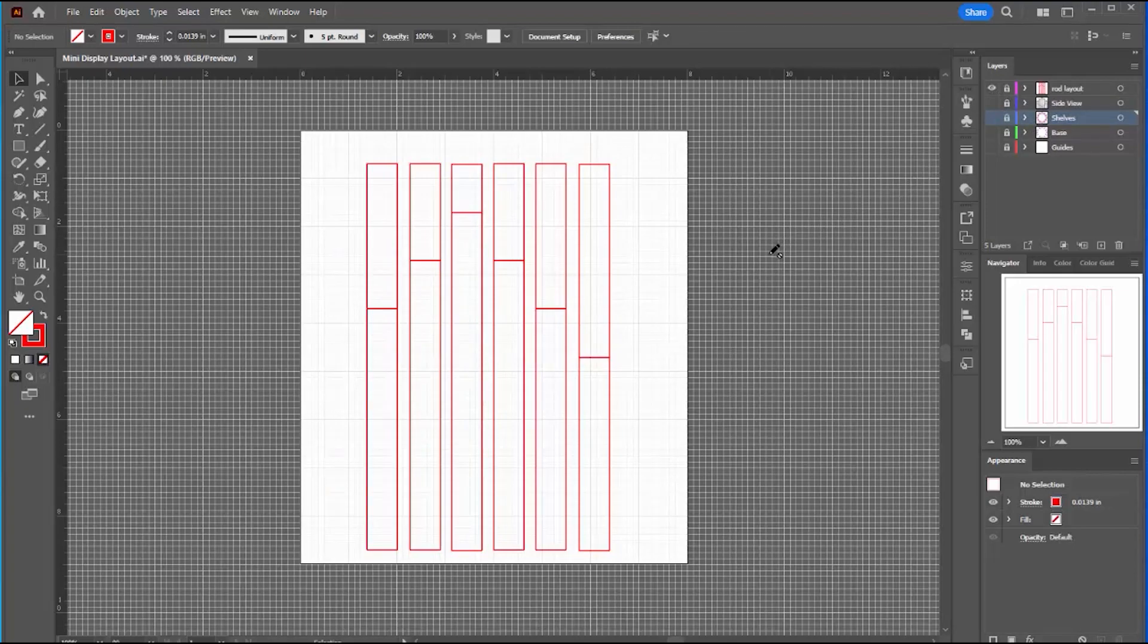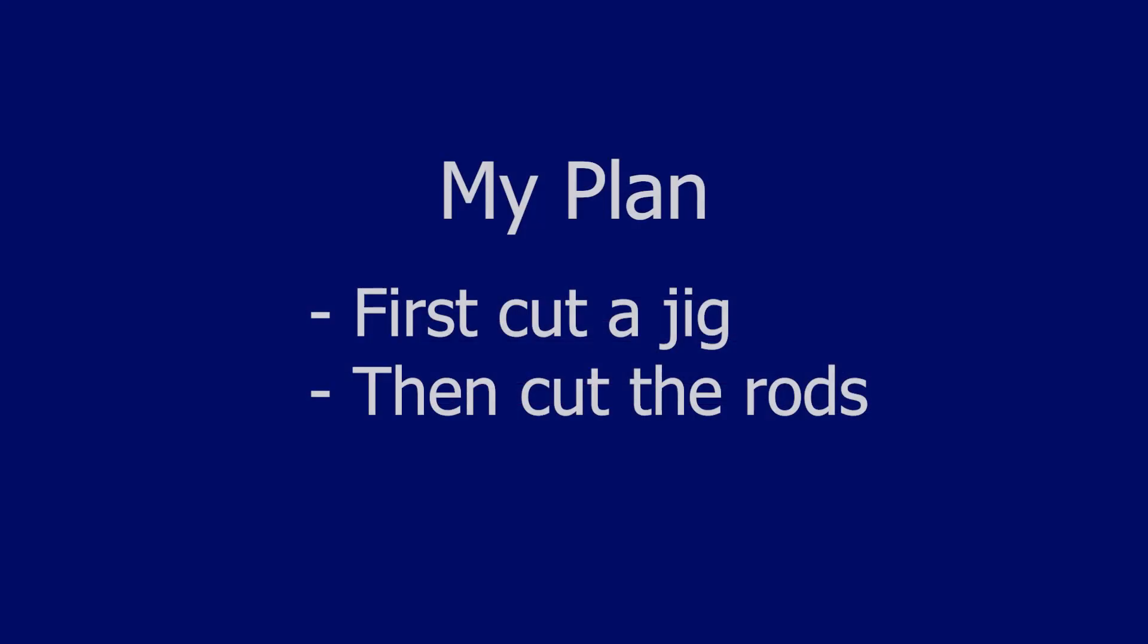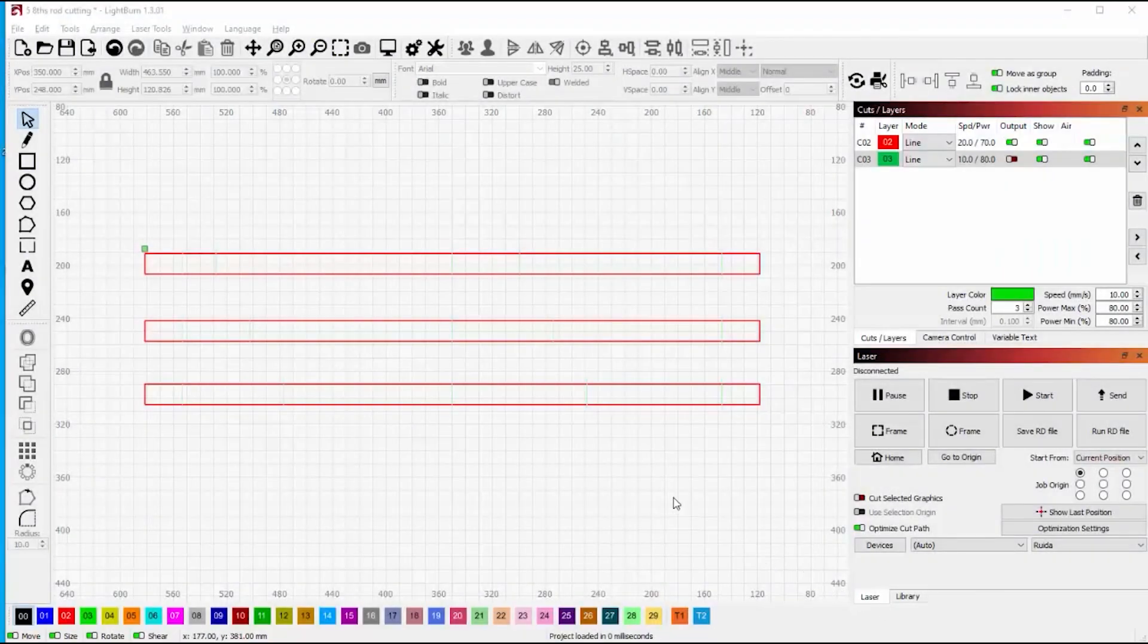I need one of each of those and I need two of the others. I figured out that I could lay them like this. They'll all fit in six eight inch lengths. My plan was to first cut a jig out of wood and then in the same Lightburn file cut the rods. The rods I bought came in three foot lengths, which is, if I cut them in half, 18 inches.